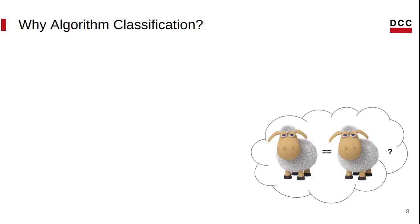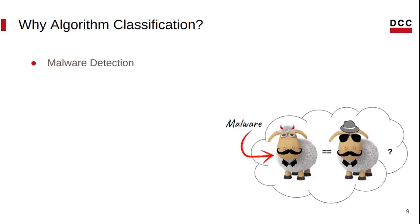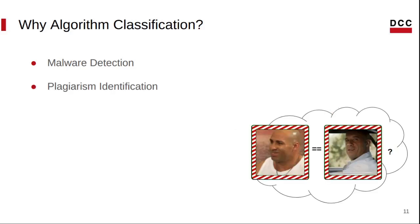This problem is also called clone detection and has many important applications. Sometimes we encounter malware with the same purpose but different characteristics. In such cases, a classifier may attempt to identify whether a program is malware. Software plagiarism is another problem that algorithm classification may try to solve. Usually, these homework grading systems implement some form of clone detection. As I mentioned earlier, algorithm classification is important.